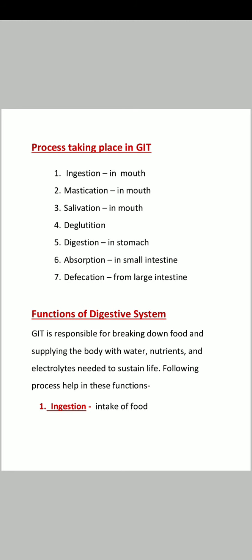The processes are: first is ingestion, which takes place in the mouth; then mastication in the mouth; salivation in the mouth; deglutation, which occurs in the oropharynx; digestion in the stomach; absorption in the small intestine; and defecation from the large intestine. These are the names of the processes — we will learn further.